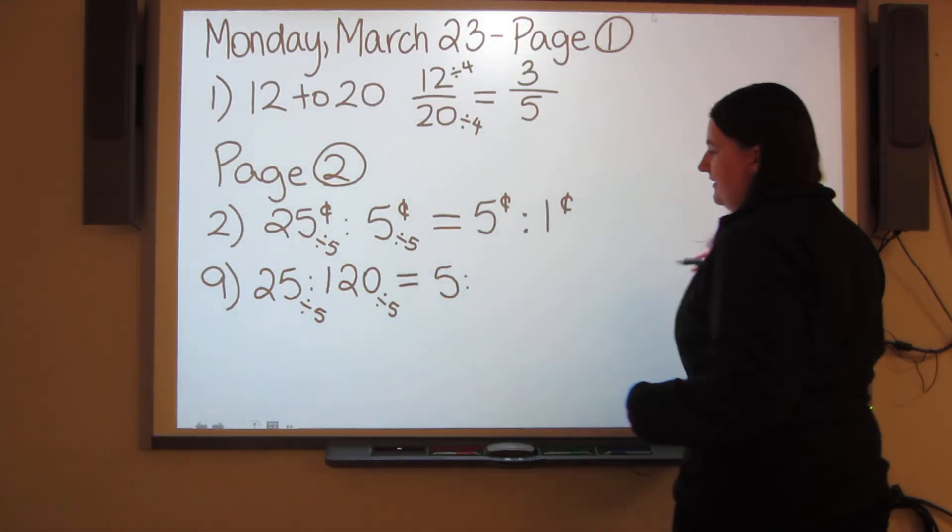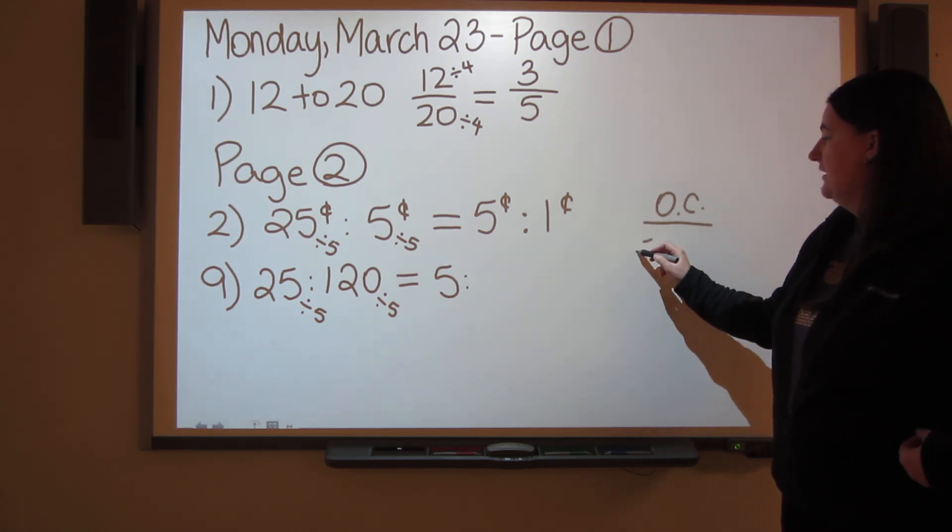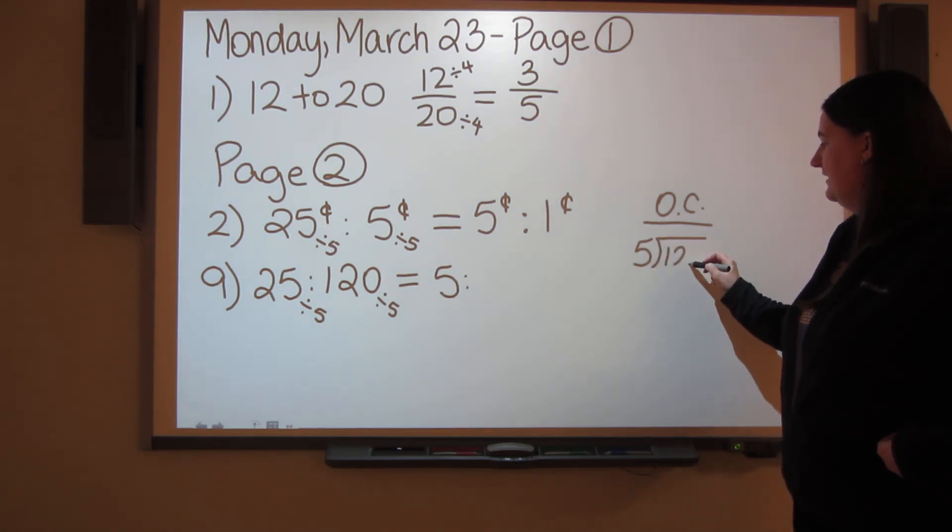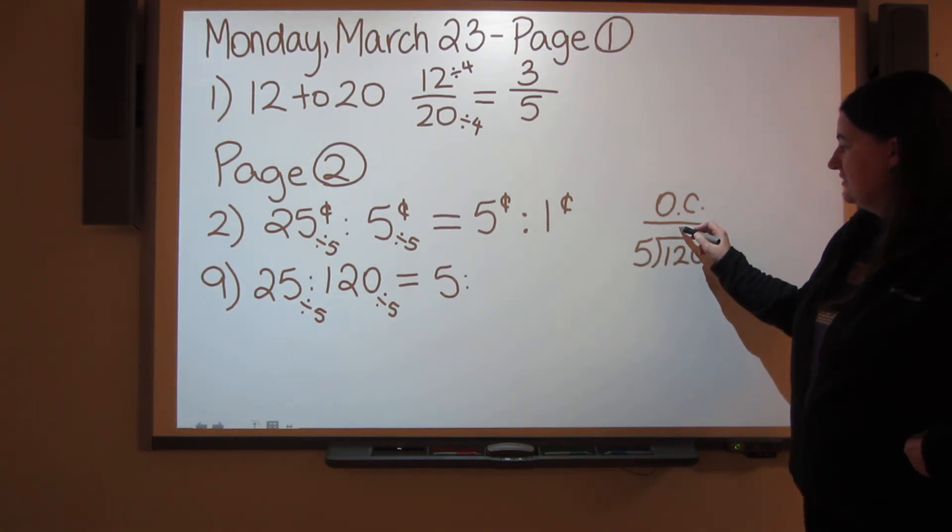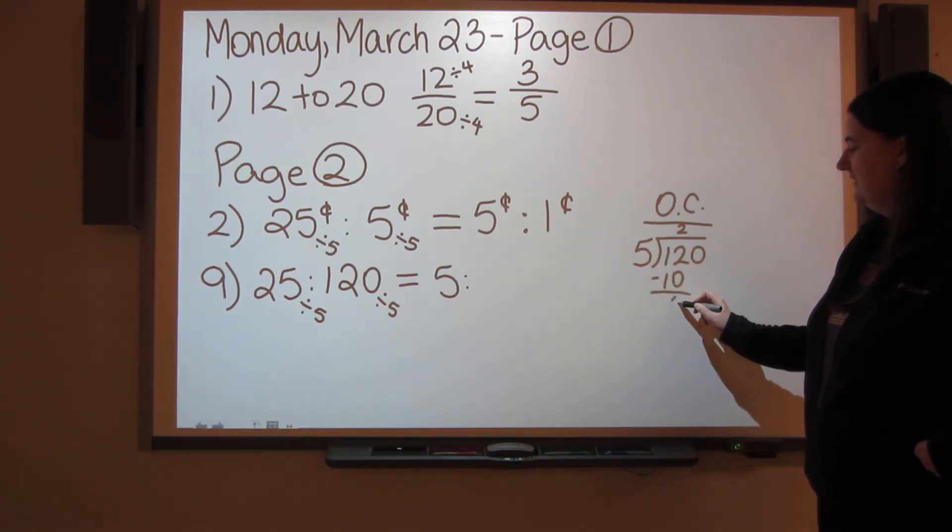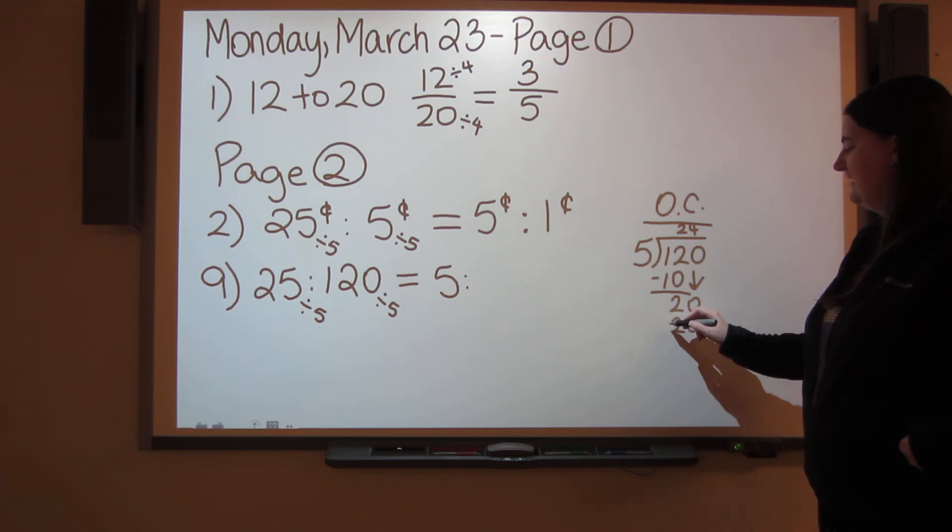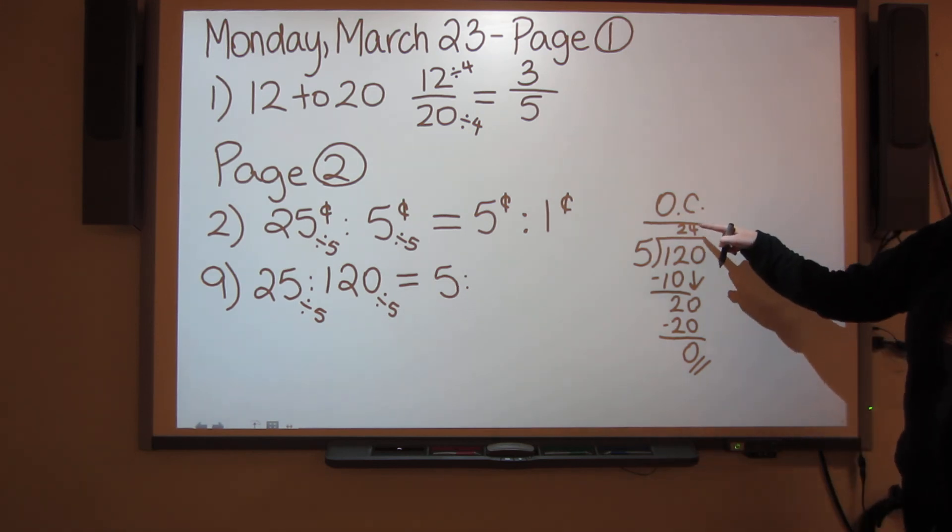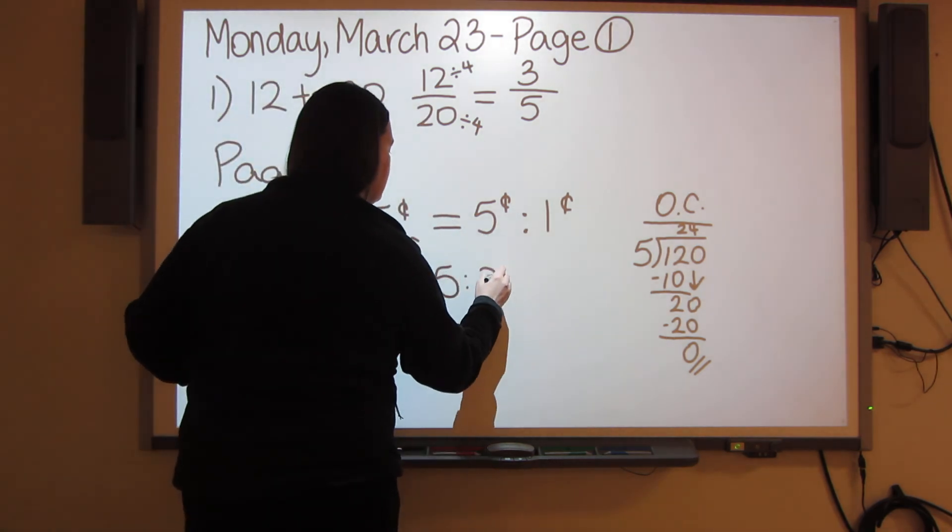25 divided by 5 is 5. That's my lowest terms for the first one. Then 120 divided by 5 - if you don't know off the top of your head, that's fine. That's why we have outside calculations. There's nothing wrong with popping over and doing a little outside calculation where you take your 5 and divide it into 120. 5 goes into 12 two times with 2 left over. 5 goes into 20 four times. So my answer is going to be 24.